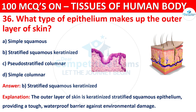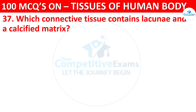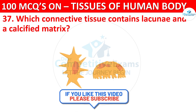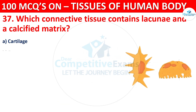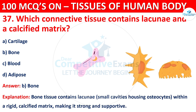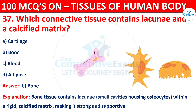Question number 37. Which connective tissue contains lacunae and a calcified matrix? The correct answer is B, that is Bone. Bone tissue contains lacunae — small cavities housing osteocytes — within a rigid calcified matrix, making it strong and supportive.